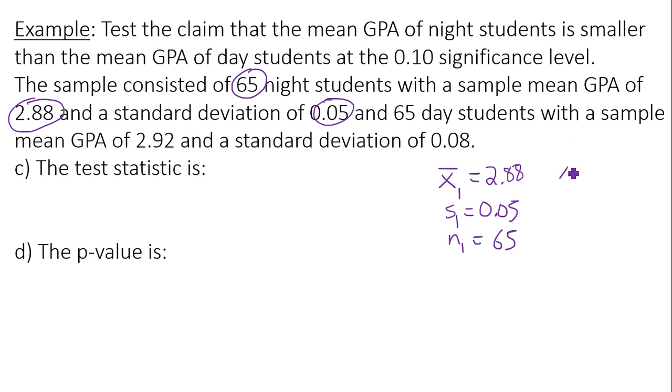Group two which is my daytime students. So group one is night, group two would be day. The mean there would be 2.92, the standard deviation is 0.08, and then there are 65 of them. The sample size is 65. And my alternative hypothesis in this case had a less than sign. So let's plug this information into Google Sheets.